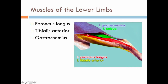Muscles of the lower limbs: the peroneus longus or fibularis longus — this red muscle down the outside of the leg. The tibialis anterior, which is the yellow one right here. And the gastrocnemius, the calf muscle in humans — right here, this big blue one.